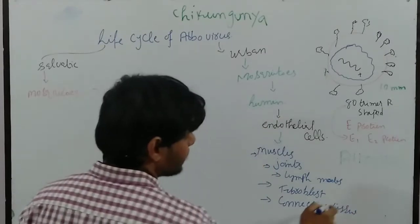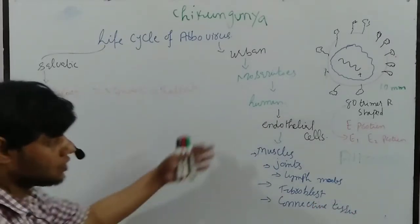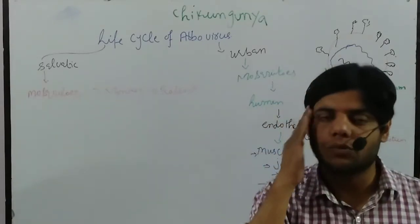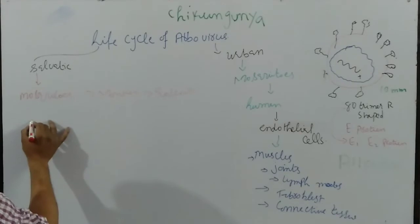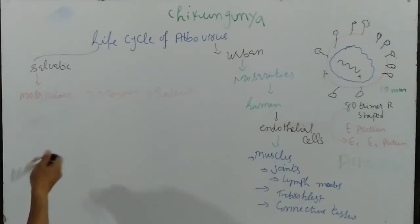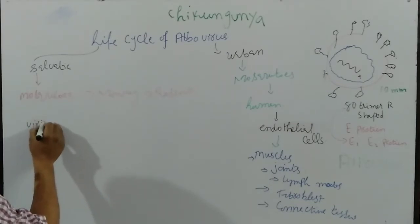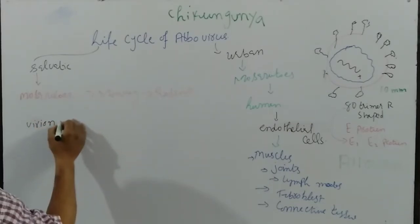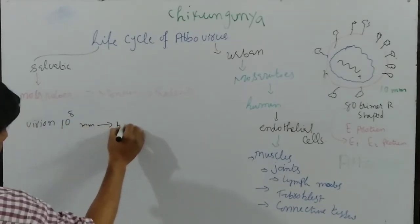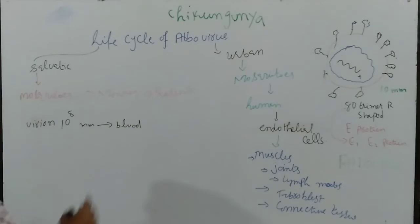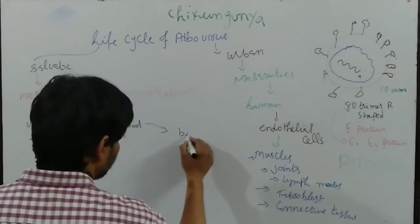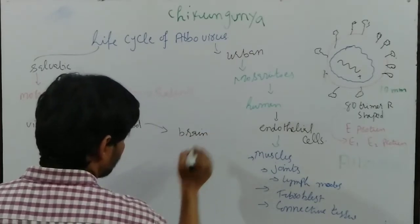Whenever these viruses are replicated in each area, they may cause problems in each area as well. Now remember, whenever we have virions inside the blood — when we have virions at 10 to the power of 8 per millimeter inside the blood — these viruses are then transmitted to the brain area.